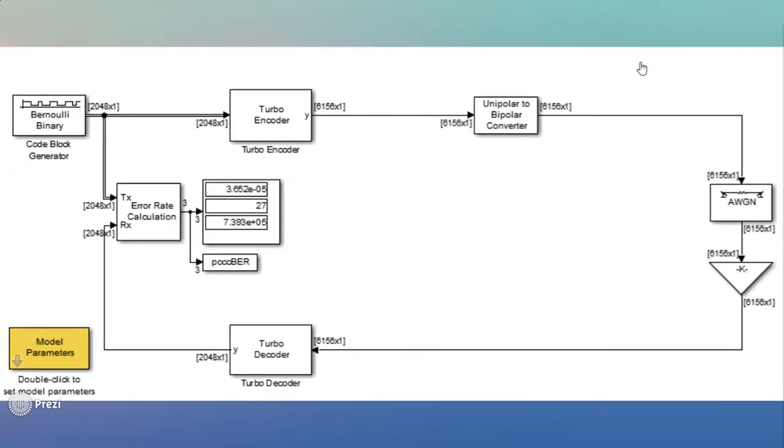This is a simulated diagram of the turbo code. This was done using Simulink. The random input generated from the Bernoulli block is given to the encoder which then acts as an input to the noisy channel after passing through the unipolar to bipolar converter.